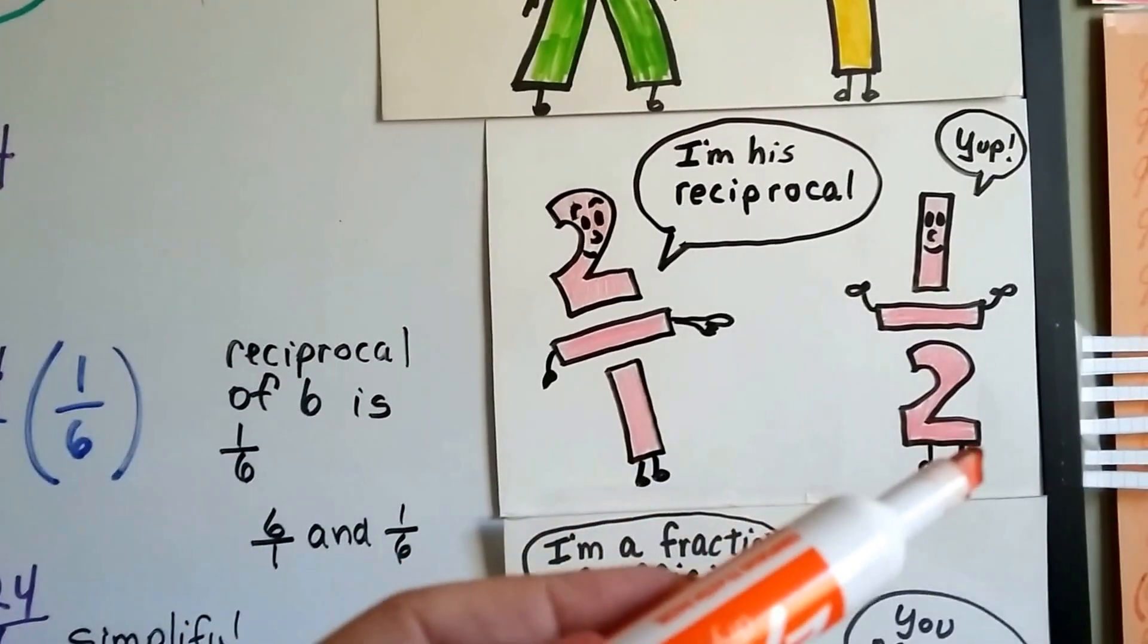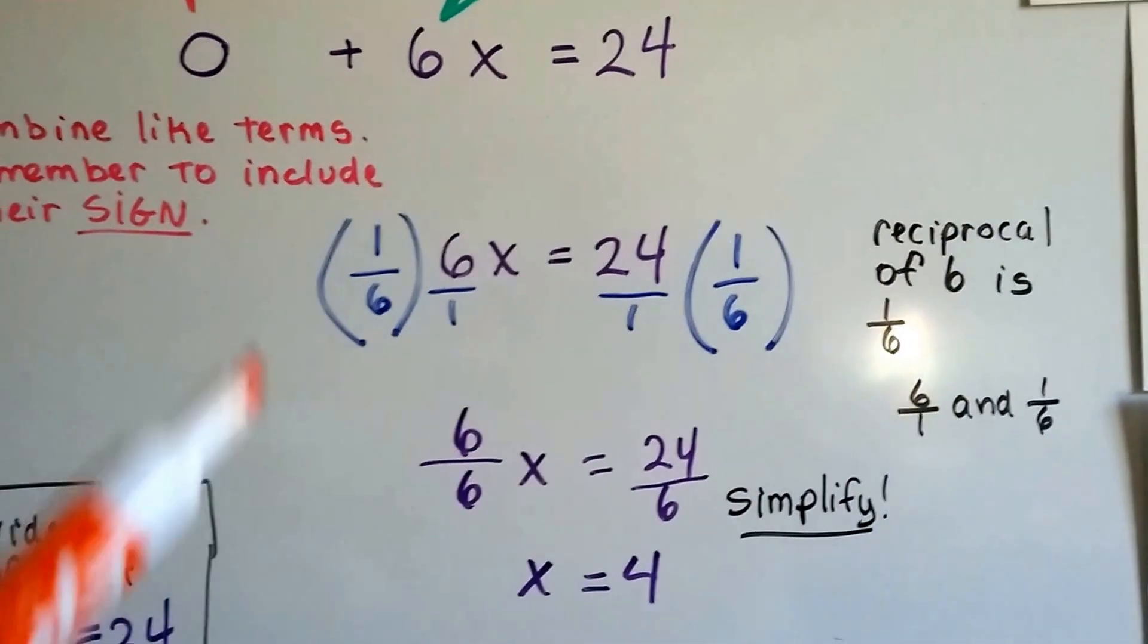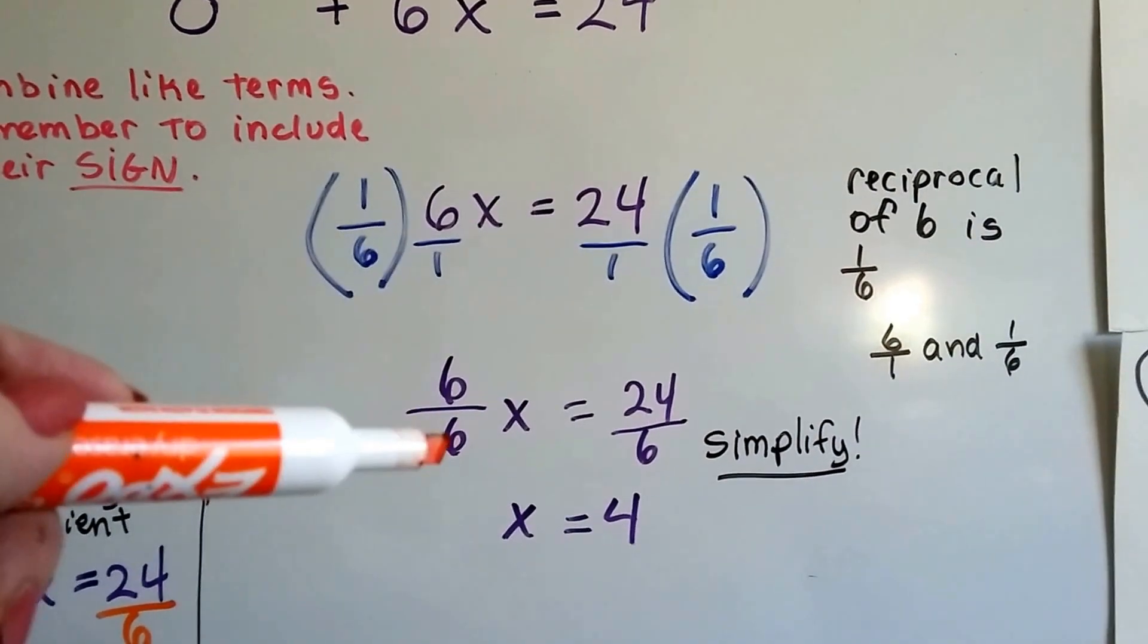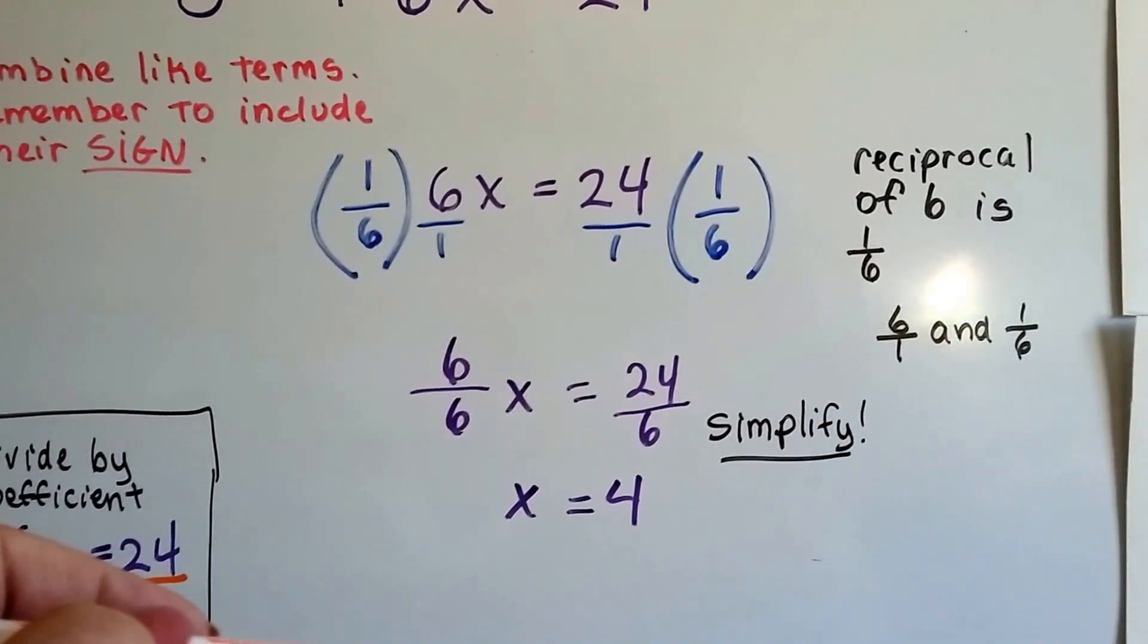6's on top, 1's on bottom. 1's on top, 6's on bottom. That's the reciprocal. And we multiply both sides, and we get 1 times 6 is 6, over 6 times 1 is 6. Same numerator and denominator, so that's a 1. That's our buddy, the invisible 1.